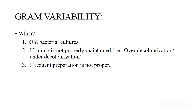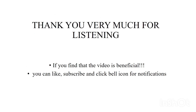Gram variability means when actual Gram-positive organisms appear Gram-negative and actual Gram-negative organisms appear Gram-positive. This can happen first with old bacterial cultures — if the organism is in a stationary phase or in decline. It can also occur if the timing is not properly maintained, especially in the third decolorization step.